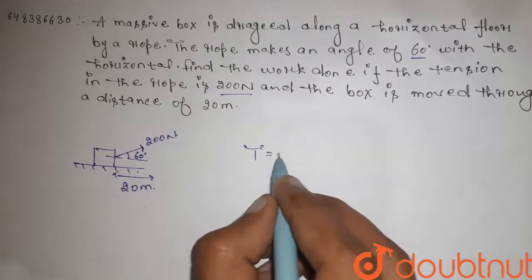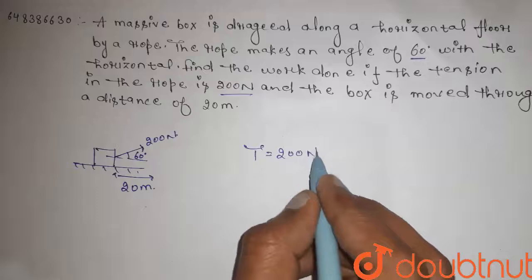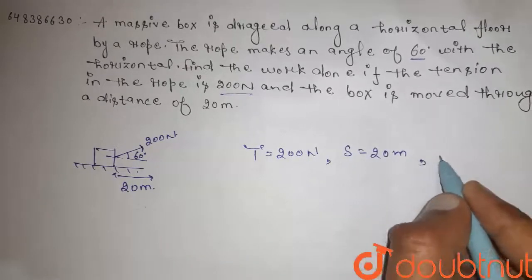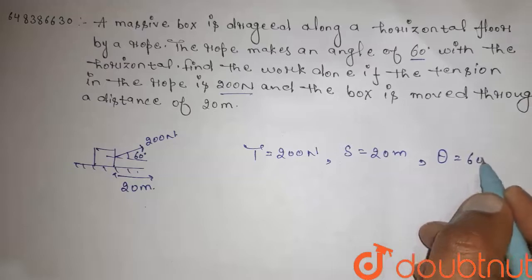So guys, tension T is 200 N, displacement S is 20 meter, angle theta is 60 degree.